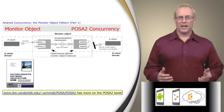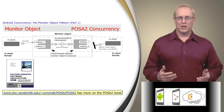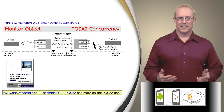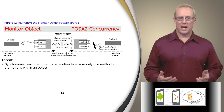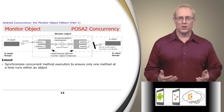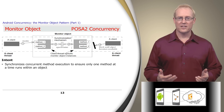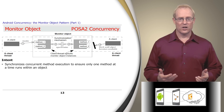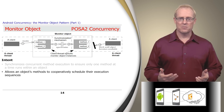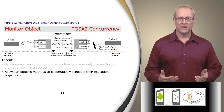The monitor object pattern appears in the POSA2 book. The intent of this pattern is to synchronize concurrent method execution to ensure that only one method at a time runs within an object. It also allows an object's methods to cooperatively schedule their execution sequence.